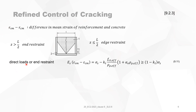For direct loads or end restraint, you use formula 9.11. End restraint is used in minimum reinforcement because direct loads always follow this formula. Multiplying both sides by the modulus of elasticity of the reinforcement, delta Epsilon times Es gives you the tensile strength in reinforcement minus a well-known coefficient. There is also a lower limit: delta Epsilon must always be bigger than (1 minus KT) times Sigma S.